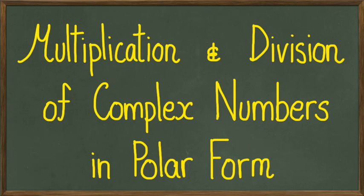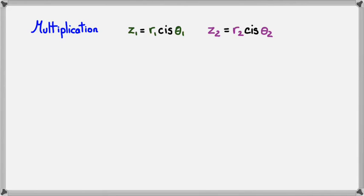Hey guys, we're going to be looking at multiplication and division of complex numbers in polar form. Let's get started. So let's say we've got two complex numbers here, z1 and z2, where obviously the modulus and argument are different for both of the complex numbers.